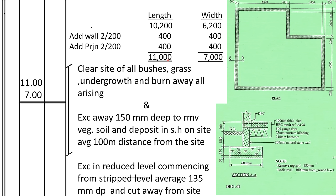The width is 6,200 plus 400 plus 200 projection each side giving 7,000mm. We've assumed this diagram is a rectangle by taking 11,000 and 7,000. When entering dimensions in the dimension column, we write them to two decimal places in meters — so 11,000 becomes 11.00 and 7,000 becomes 7.00. There is a video on our channel explaining how to enter dimensions into a takeoff sheet; if you're a beginner, please find and watch that video first.